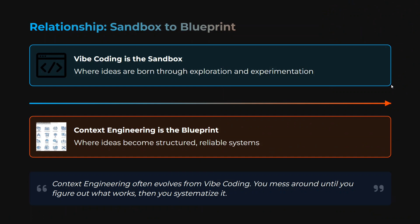The relationship between vibe coding and context engineering: they are not completely different from each other. Vibe coding is the sandbox where ideas are born through exploration and experimentation, while context engineering is the blueprint where ideas become structured. So vibe coding, if you don't know anything about a topic, can be a first step, and then you can use whatever output you get to do context engineering. Context engineering often evolves from vibe coding — you mess around until you figure out what works, and then you systemize it.